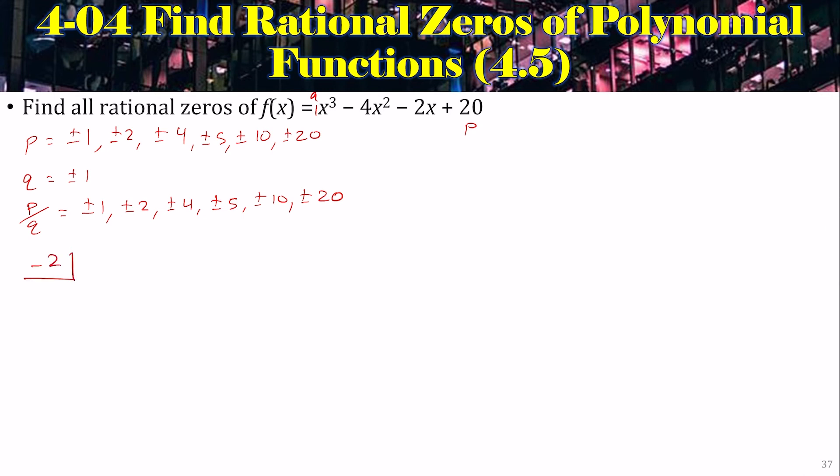So, we'll use negative 2. Alright, the coefficients are 1, negative 4, negative 2, and 20. That was from up here. Bring down and multiply, add, and multiply, add, and multiply, and add. And look at that, you got a 0. It was x cubed, we divided by x, now it's x squared. The depressed polynomial is quadratic, so we can probably just factor that or use the quadratic formula.